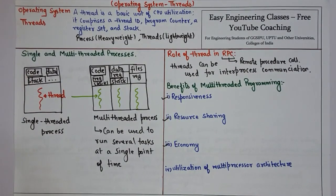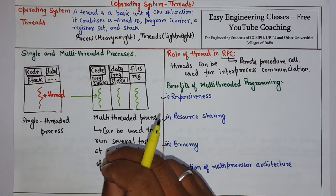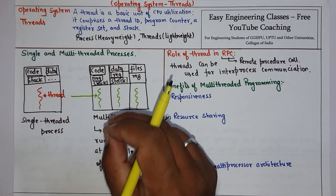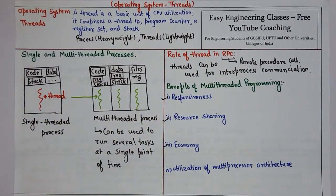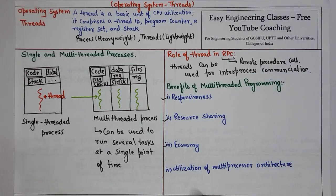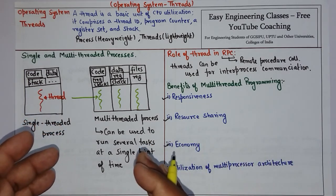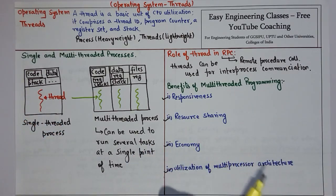The third benefit is economy. Allocating memory and resources for process creation is costly. Since threads are created by a process and share its resources, it is more economical — instead of creating a process for every request, we can create a thread for that particular request. The fourth benefit is utilization of multiprocessor architecture, where threads may run in parallel on different processors.